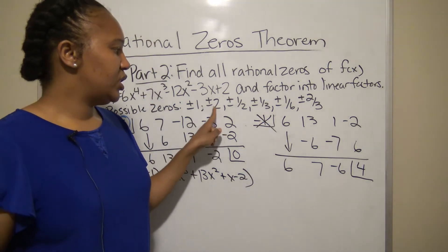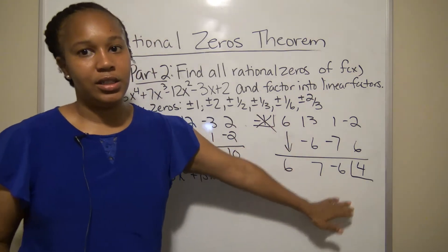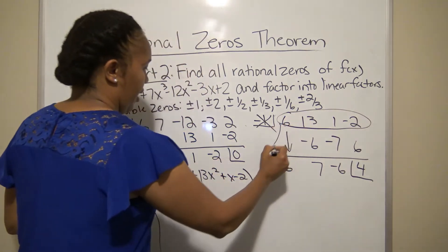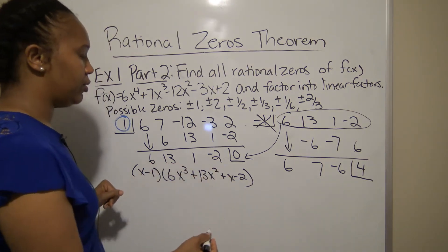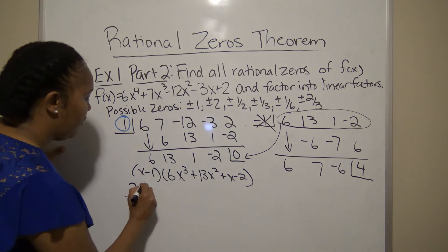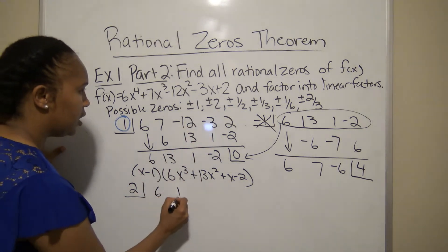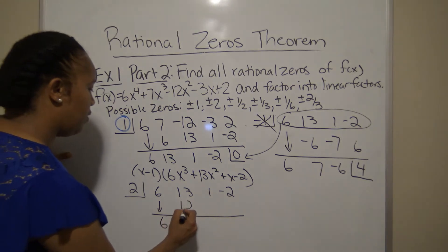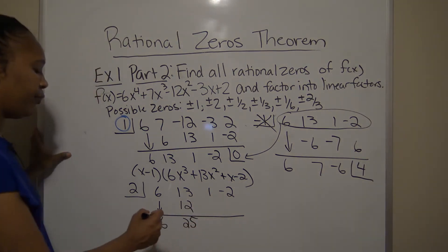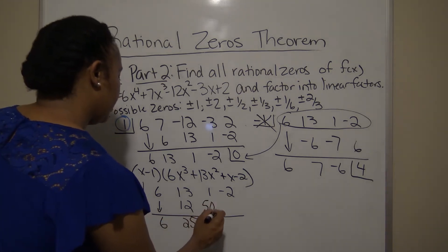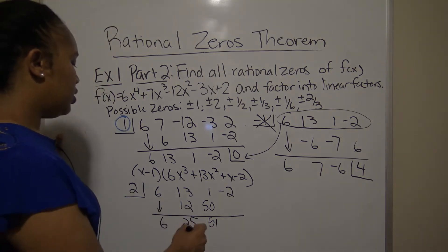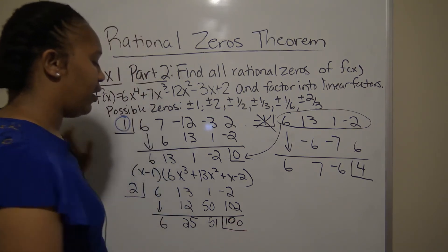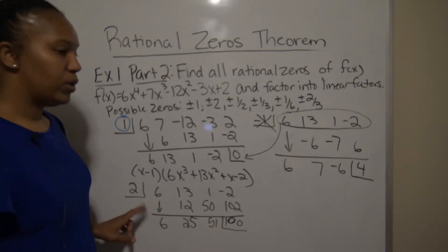Next I'll test k = 2 using the same coefficients 6, 13, 1, -2. Dropping 6: 2×6=12, 13+12=25, 2×25=50, 1+50=51, 2×51=102, -2+102=100. The remainder is not zero, so 2 is not a zero.